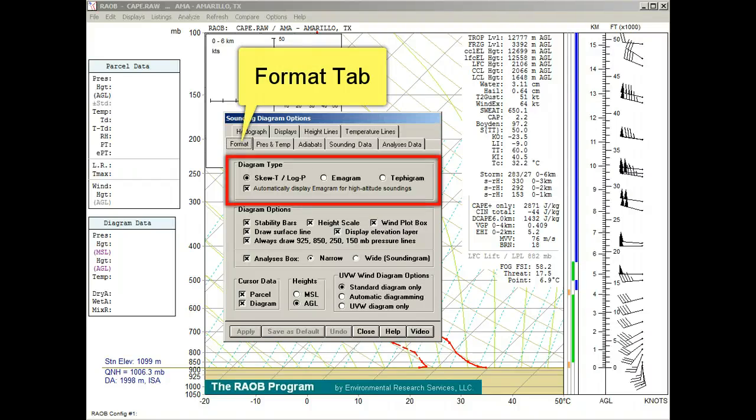The Format Tab: there are three diagram types. First is the SKU-T log-P diagram, which also has a sub-option to automatically switch to the ammogram for soundings extending above 100 millibars.